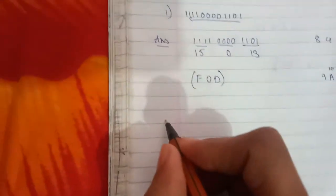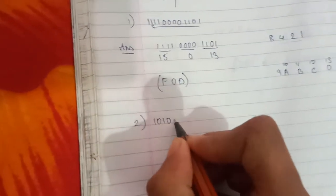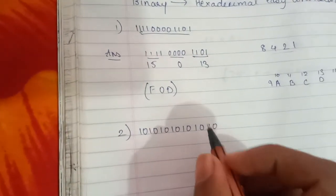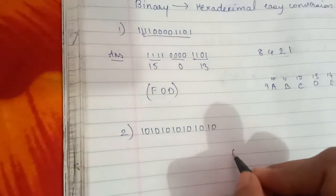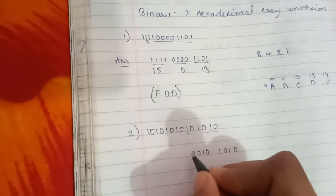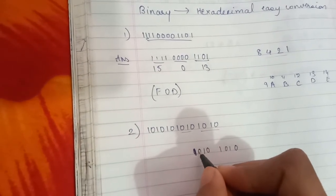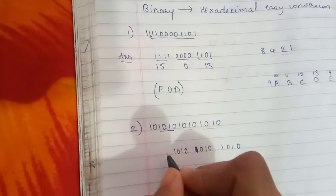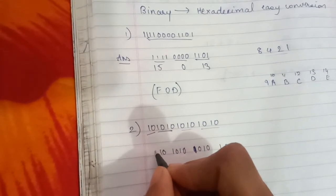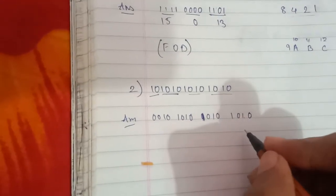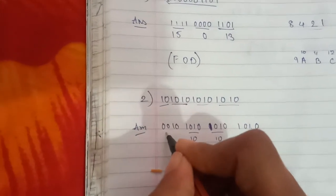Now we'll take a second example. We group the bits into sets of 4 from right to left: 0 1, 0 1, 0 1, 0 1, 0 1, 0 1. We add extra zeros where needed. Applying weights 1, 2, 4, and 8: 2 and 8 gives 10, and similarly another group gives 10, and another gives 2.